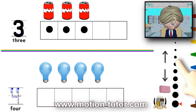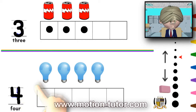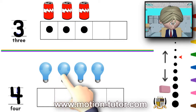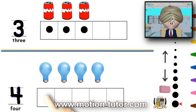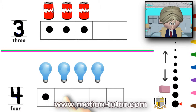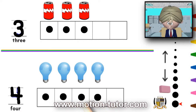Now, let's look at the number four. Remember, we go down, over, and then we cross it like that. And we see it's one, two, three, four — four light bulbs. So, this is how four looks. I'll place a counter in each space in this five frame. One, two, three, four. So, that's how four looks like.